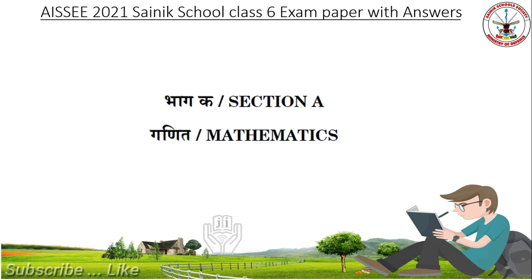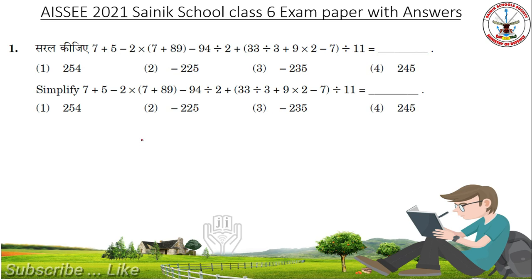First section: Mathematics. Simplify 7 plus 5 minus 2 into 7 plus 89 minus 94 divided by 2 plus 33 divided by 3, plus 9 into 2 minus 7 divided by 11. Students, hope you are practicing very well. Pause the video and do the calculation. Answer: minus 225.